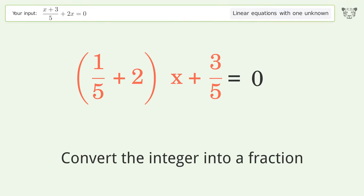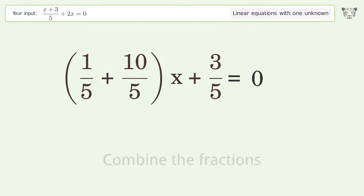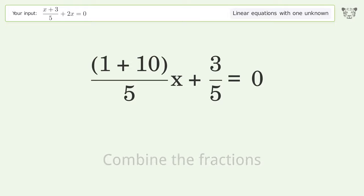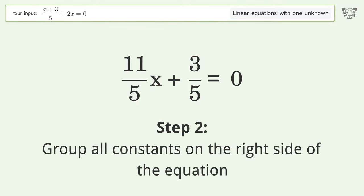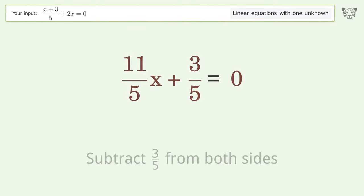Convert the integer into a fraction, combine the fractions. Combine the numerators, group all constants on the right side of the equation, subtract 3 over 5 from both sides.